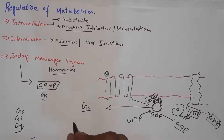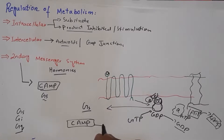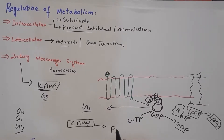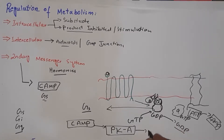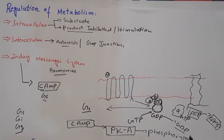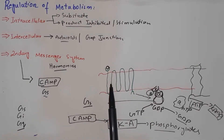This cyclic AMP then activates protein kinase A. When protein kinase A gets activated, it catalyzes the phosphorylation of different enzymes and proteins. When these enzymes and proteins get phosphorylated, they become activated and perform their roles. In this way, the hormone which binds to the G protein-coupled receptor exerts its effect through the secondary messenger system.